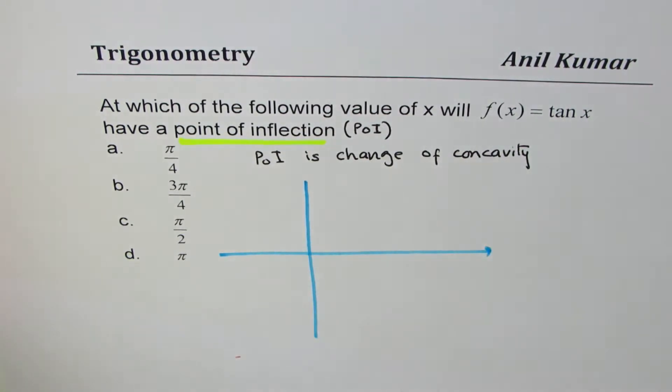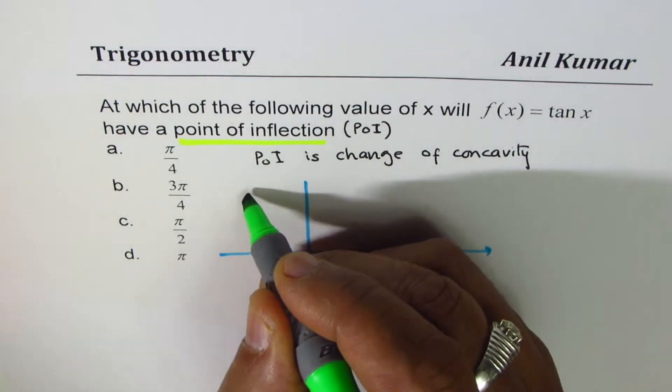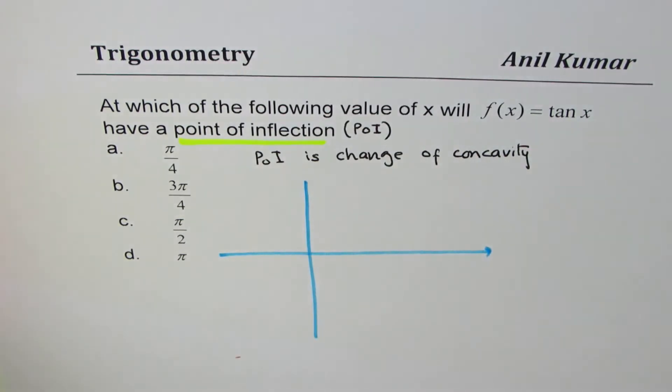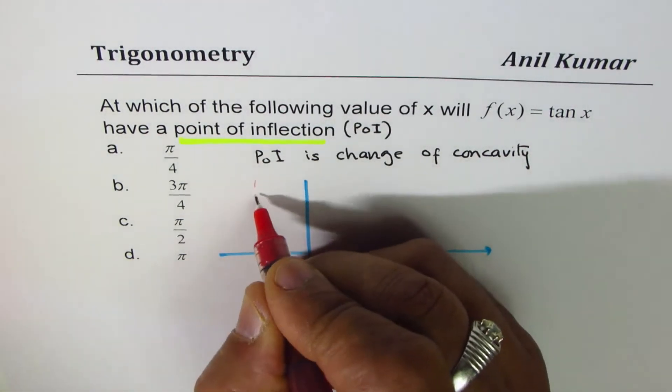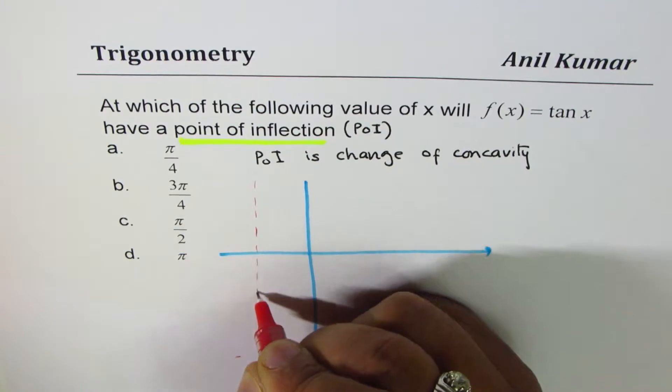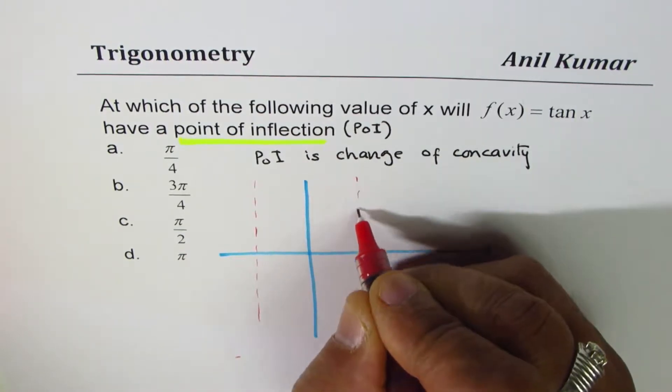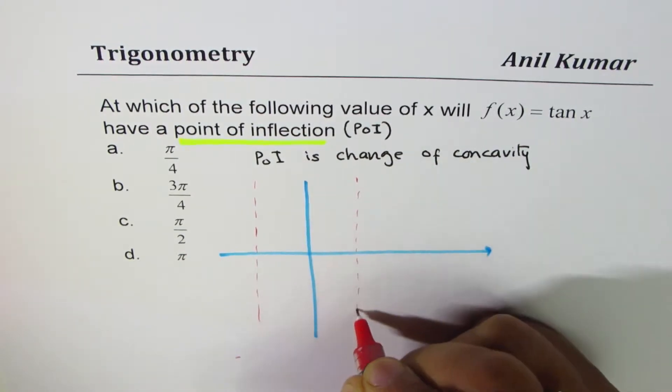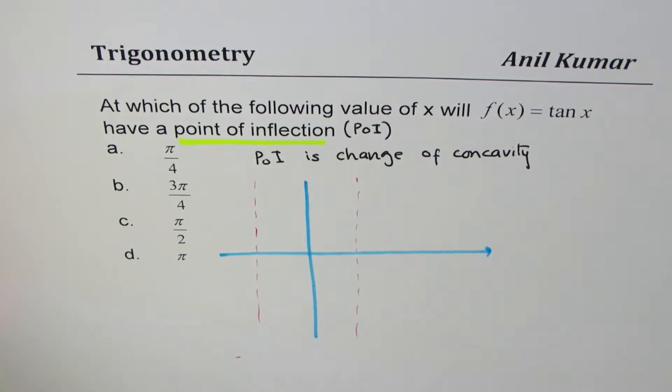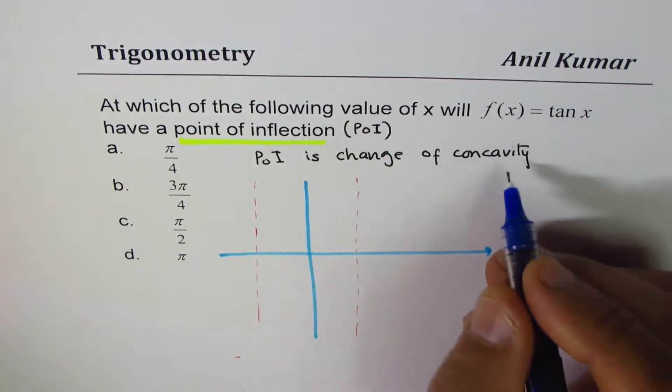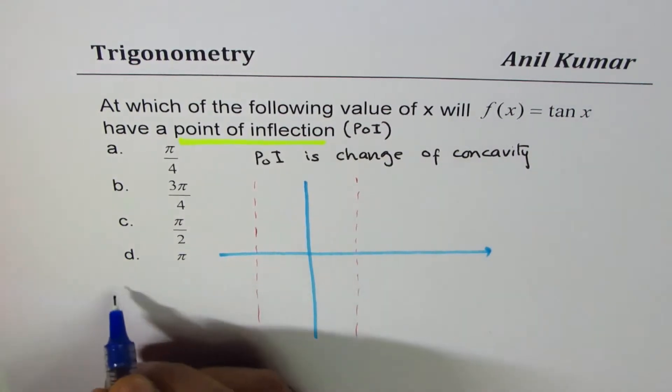So tan x as you know has vertical asymptotes. Let me write down what I'm trying to do here: what is tan x equal to?